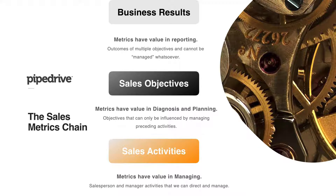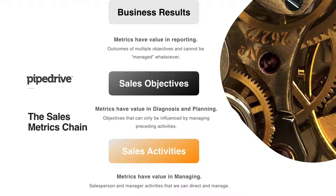Let's start with sales activities. These activities absolutely have value — both the salesperson and sales manager need to be focused on them. These activities influence sales objectives. Sales objectives are metrics that help us diagnose and plan; they are influenced by upstream sales activities. The business results are then impacted by the sales objectives. Business results are great for reporting, great to tell your friends you doubled or tripled revenue, but the real nitty-gritty management work is further downstream in sales objectives and sales activities.